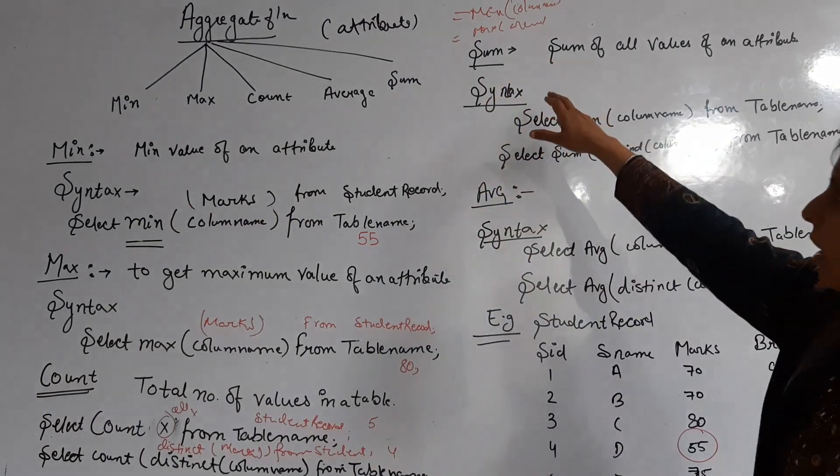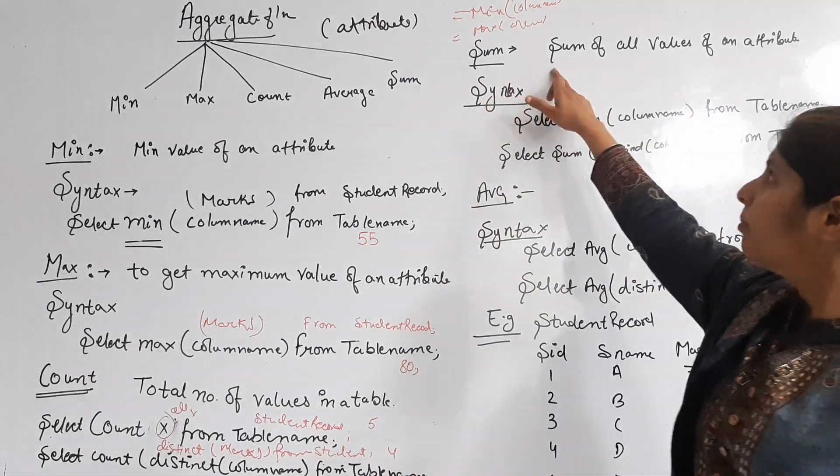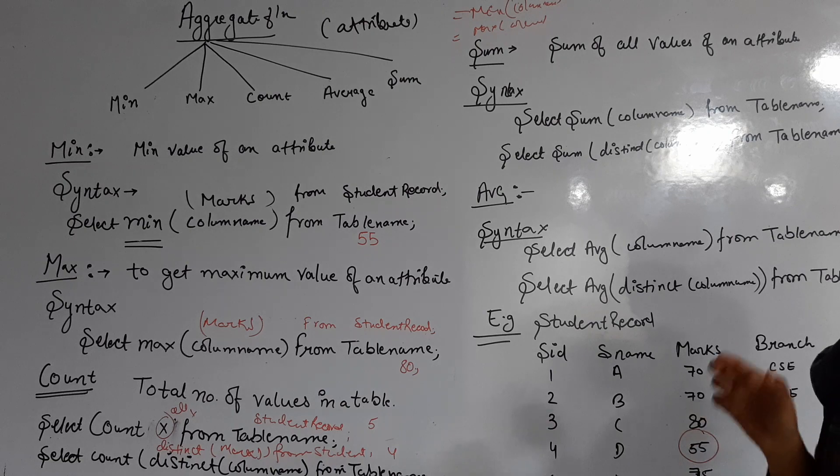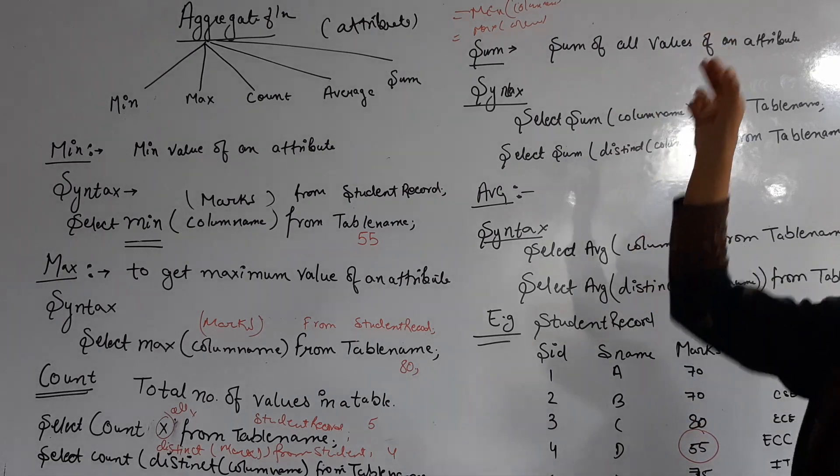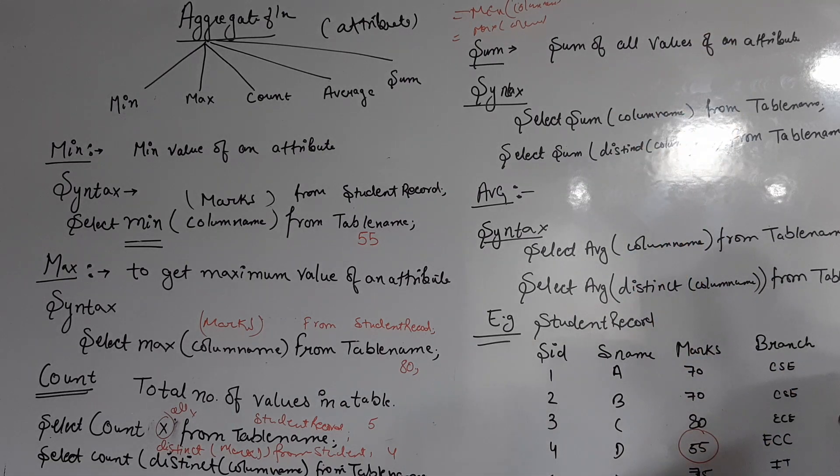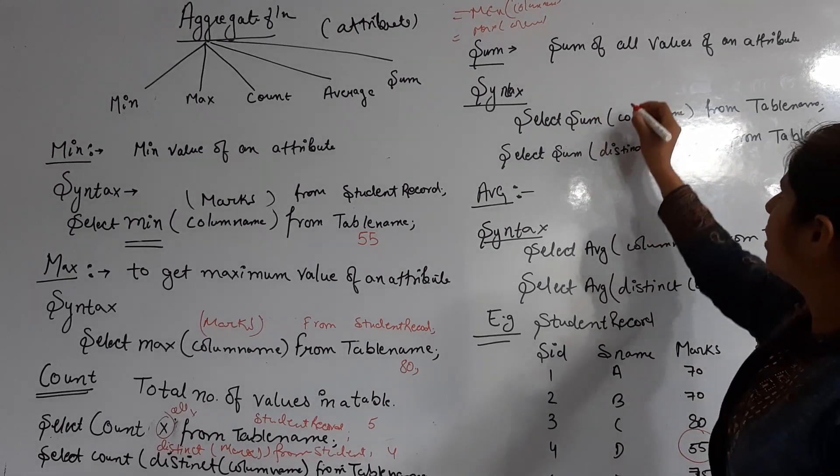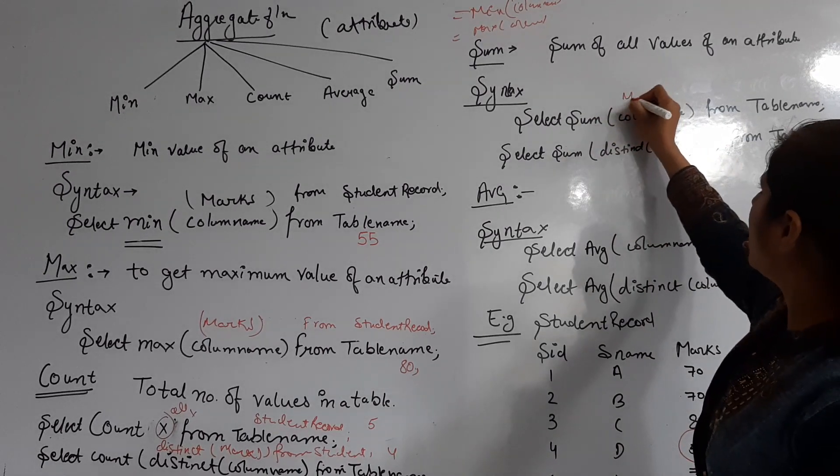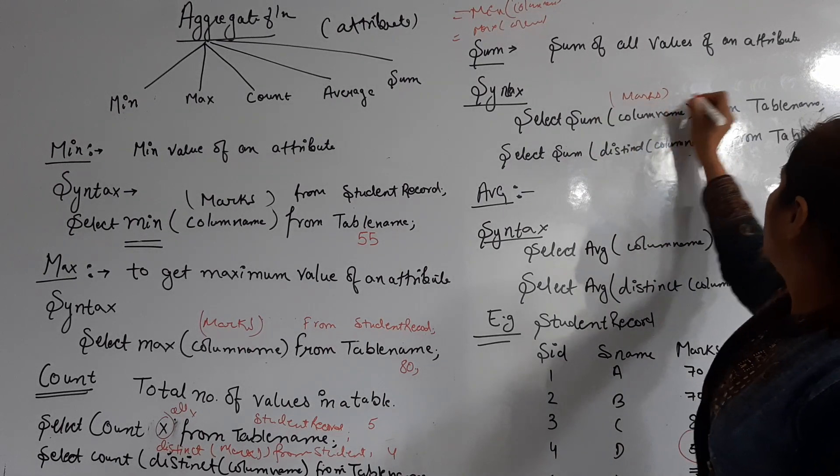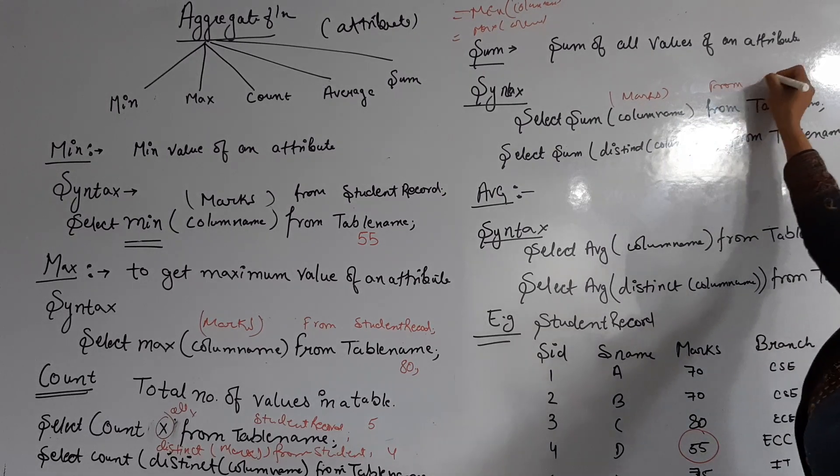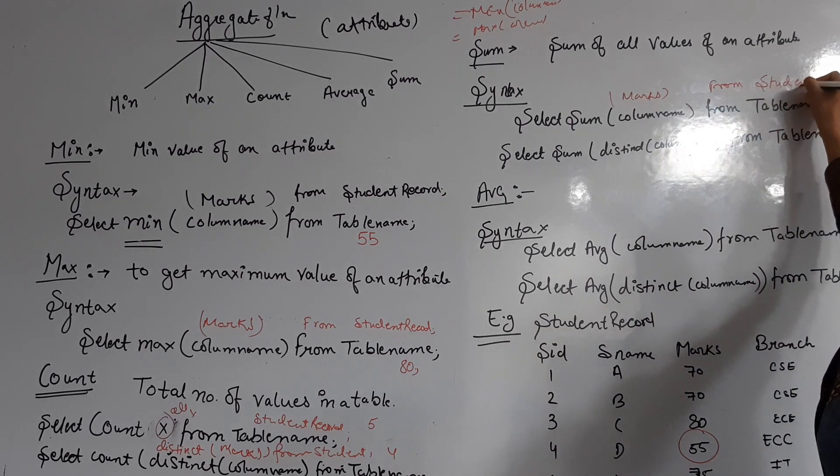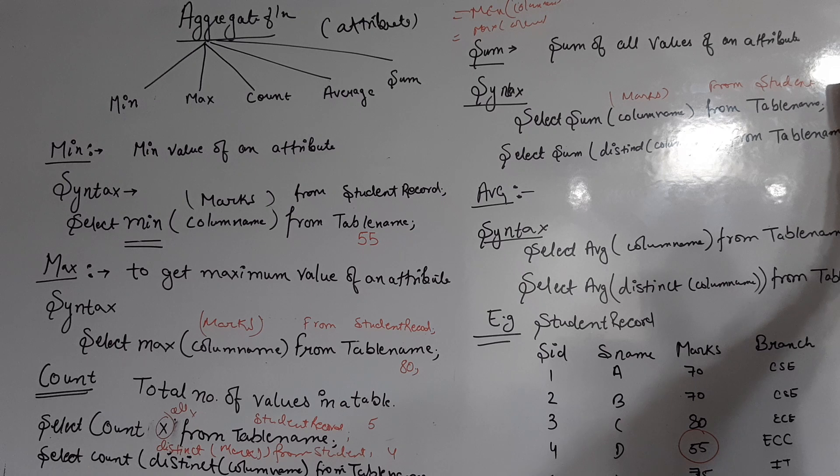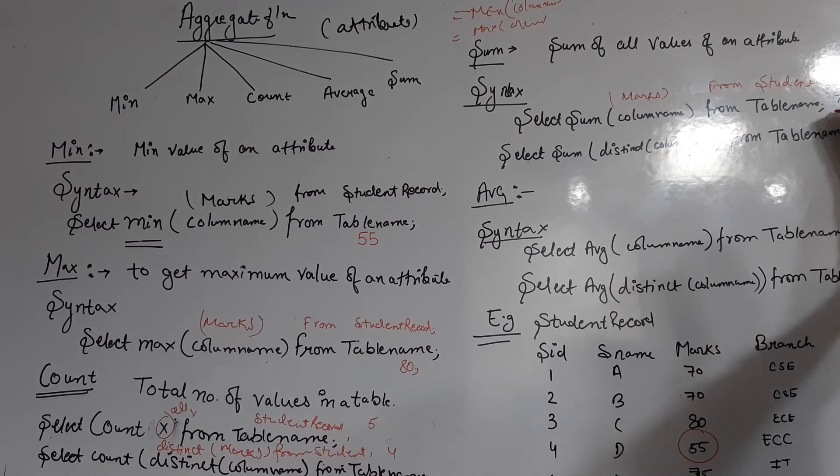Now the next aggregate function is SUM. SUM means we write SELECT SUM(column_name) - column name means marks - FROM student_record. What does SUM do? It adds 70 plus 70 plus 80 plus 55 plus 75.